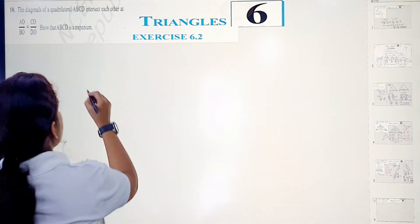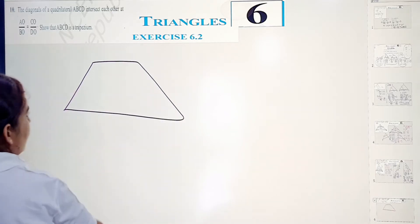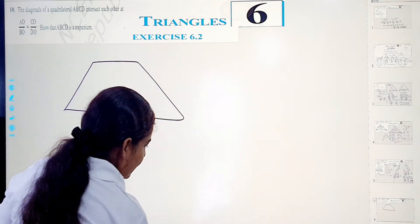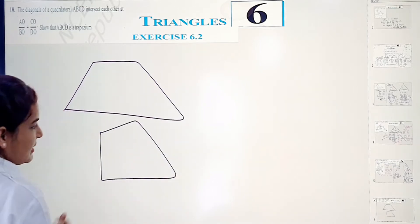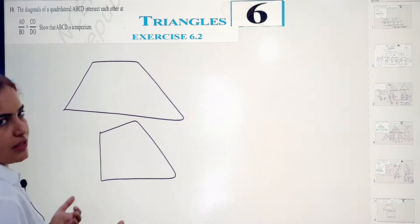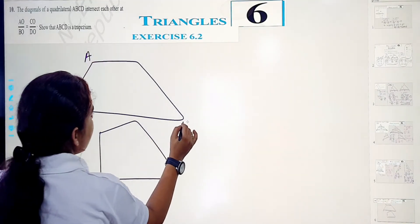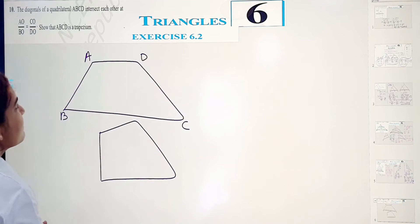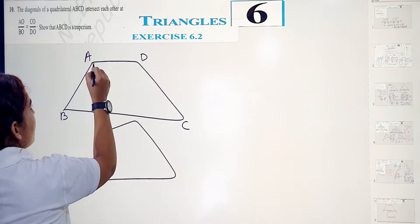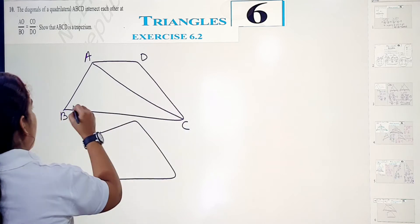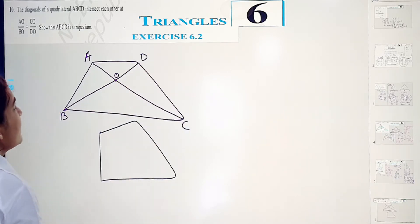Diagonals of a quadrilateral ABCD. Let's draw quadrilateral ABCD. The diagonals intersect — we have intersecting point O.